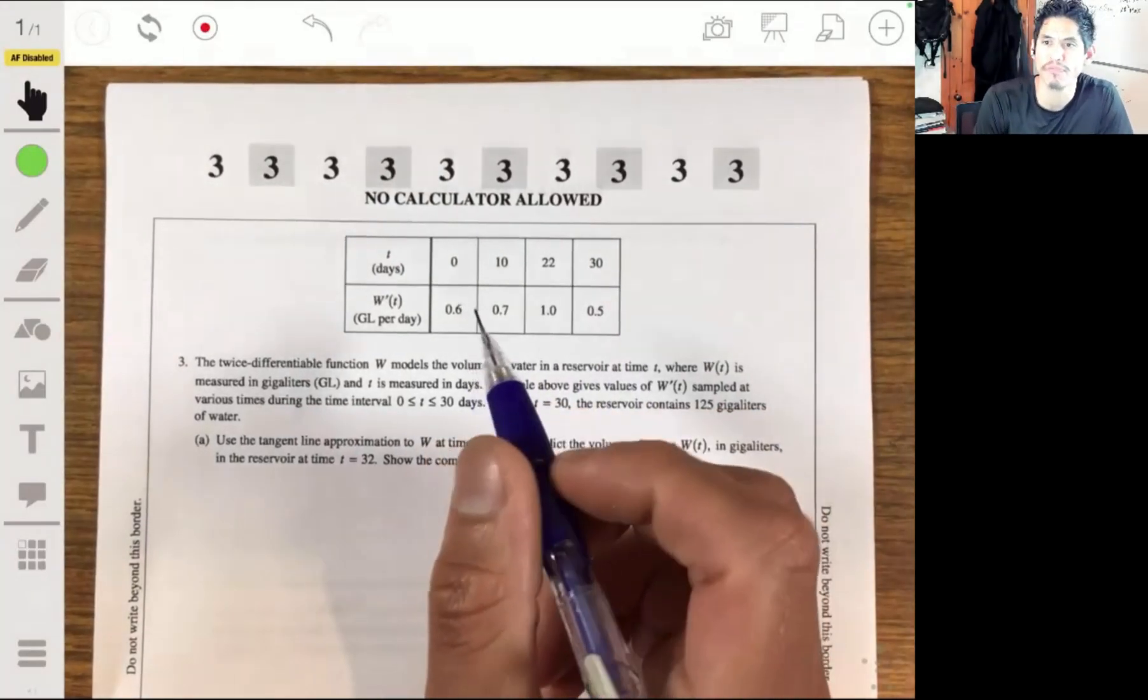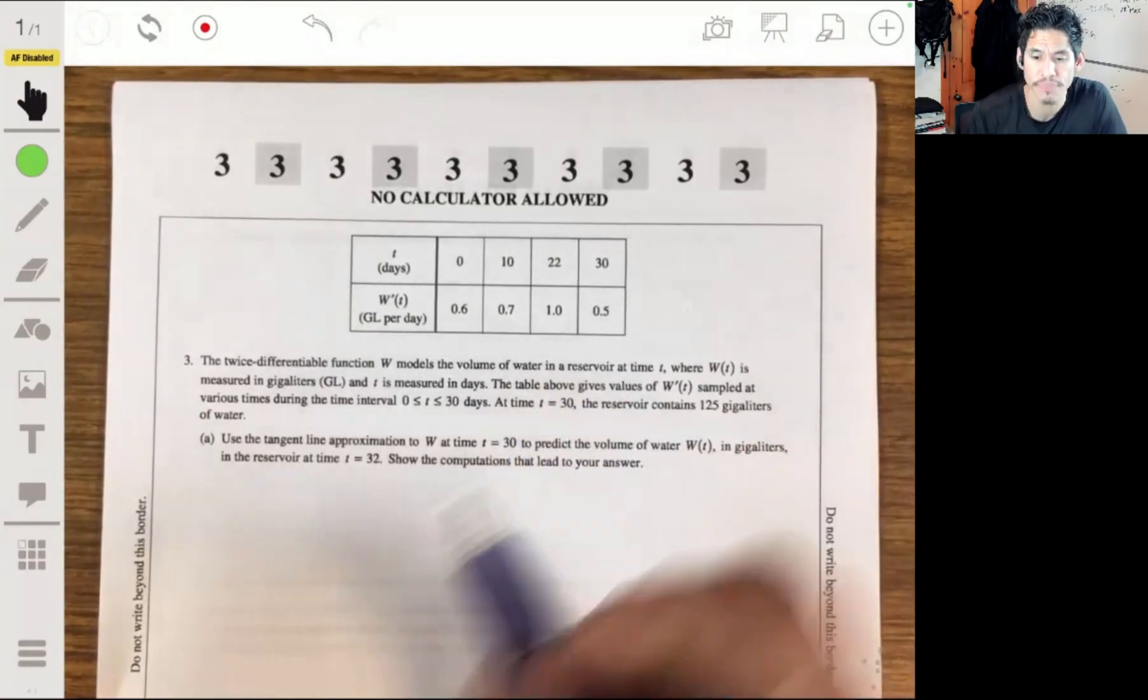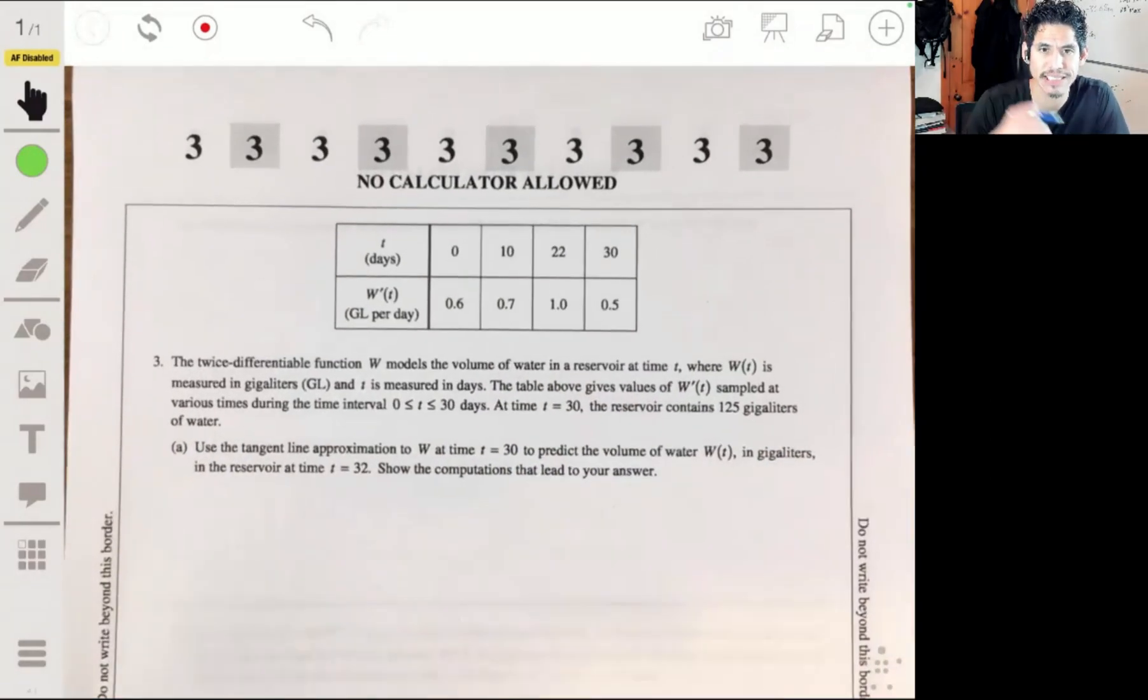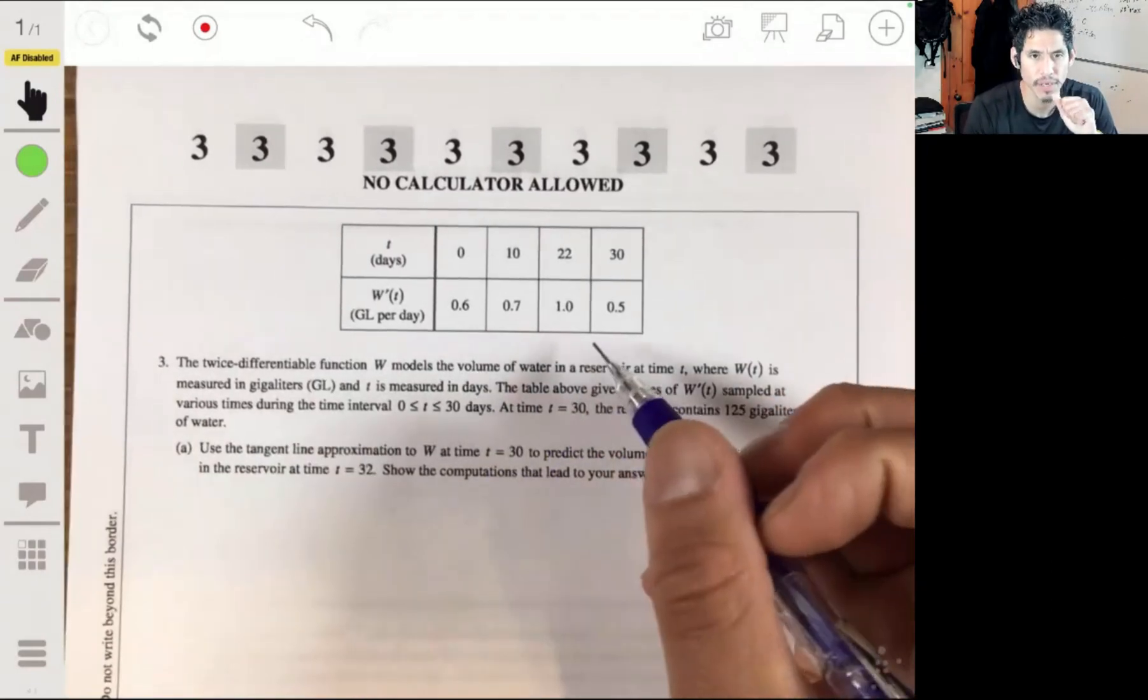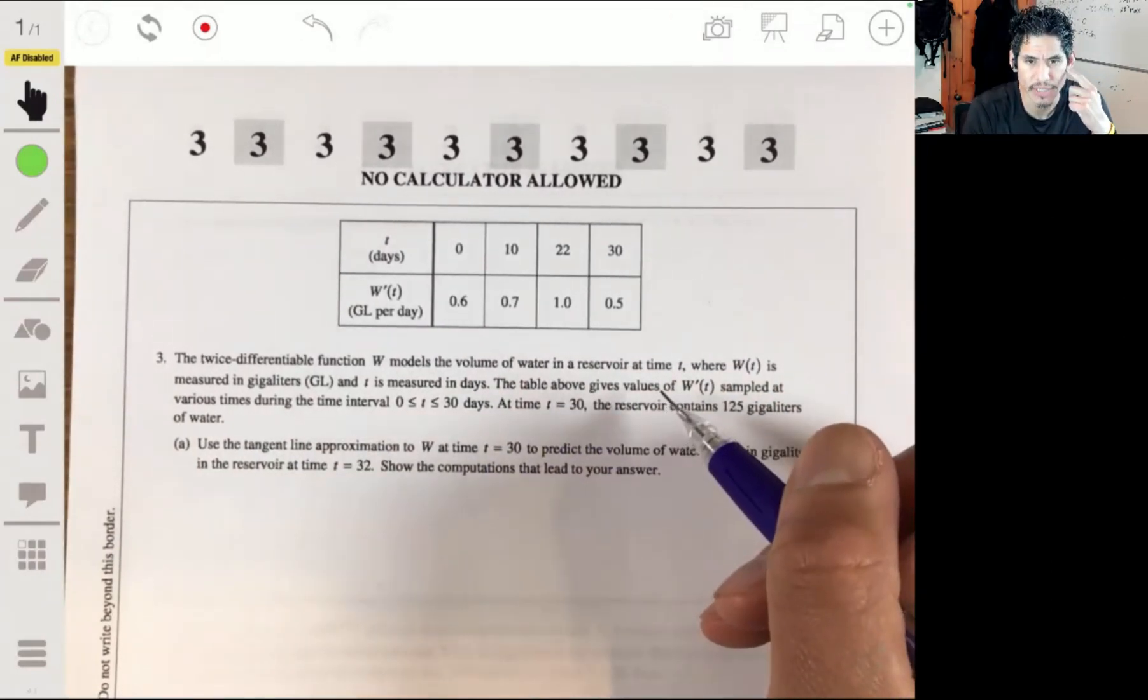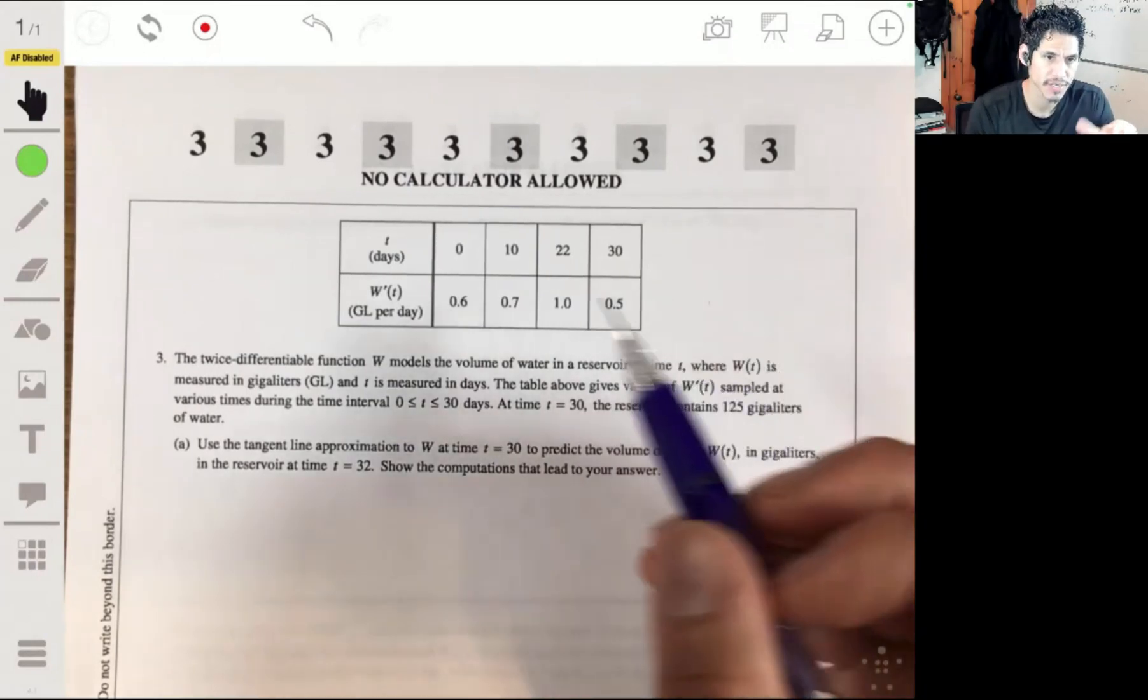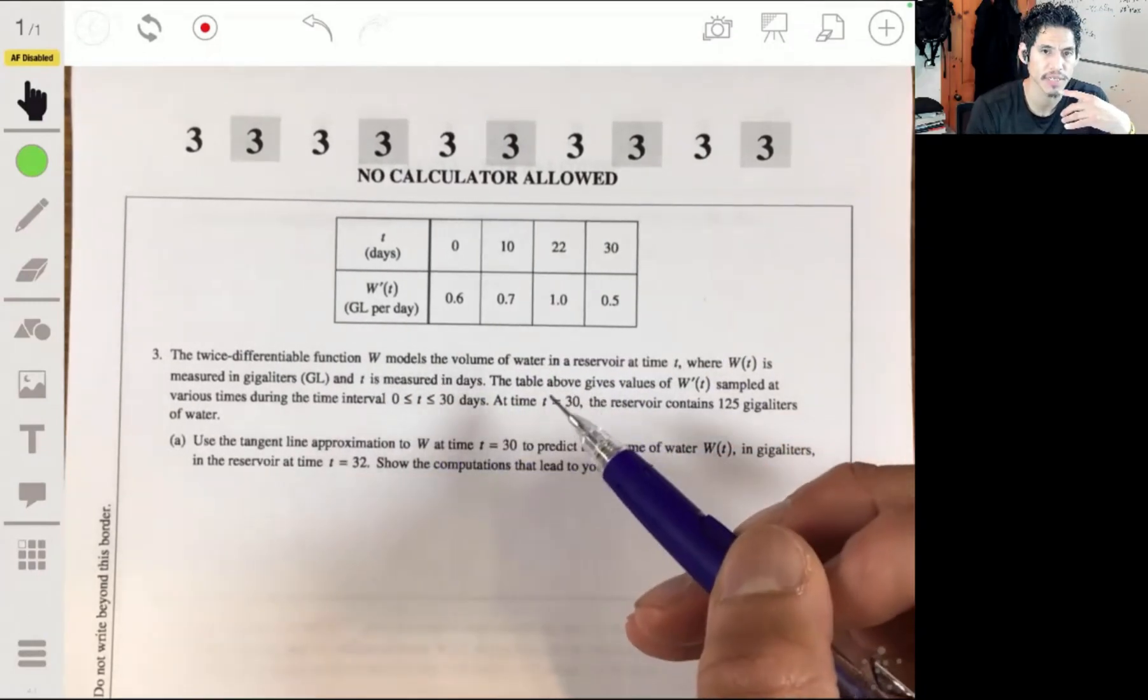All right, so let's go over free response question three from the 2013 practice exam. Here we have a twice-differentiable function w that models the volume of water in a reservoir at time t, where w of t is measured in gigaliters and t is measured in days.